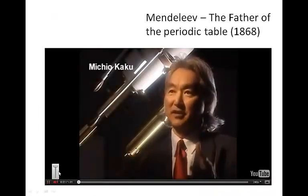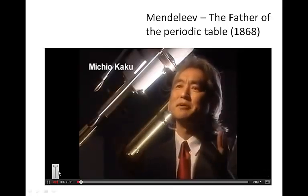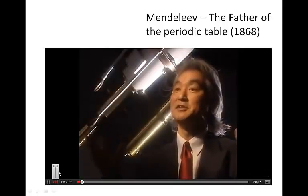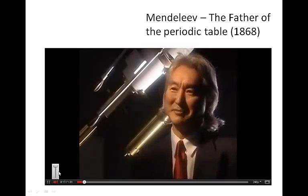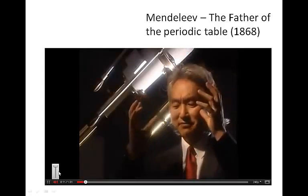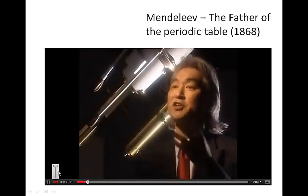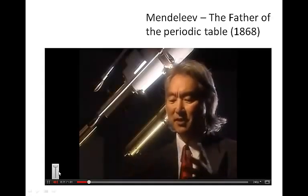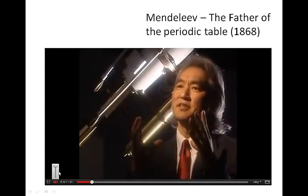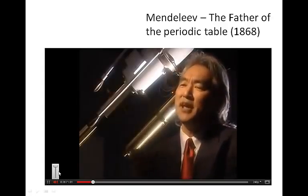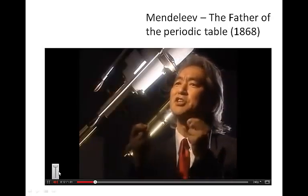Dmitry Mendeleev had a very strange history. He came from Siberia, the backwash of the Tsarist Empire, and he was the last of 17 children. As a consequence, his family lived in total poverty. His father went blind and eventually died, leaving his family in tremendous poverty. Then his mother, in one of the great stories of self-sacrifice, basically gave up her life to make sure that her youngest son had an education.